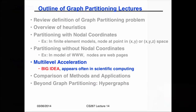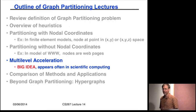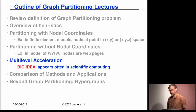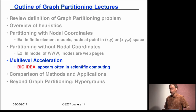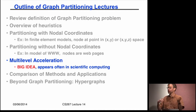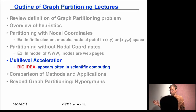Welcome back everybody. We're in the middle of talking about graph partitioning. Here's a review of what we did last time. Graph partitioning is where you're given a bunch of vertices and edges, and you want to divide them into two groups — one group of vertices and another — where it's load balanced, with about an equal number of vertices in each half, and as few edge crossings between the two halves as possible. Finding the best way to do that is NP-complete, so exponentially expensive.